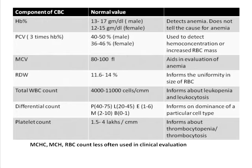Red cell distribution width is not often reported by many laboratories but adds value because it gives you information about whether the sizes of the red cells are uniform. If they are of grossly varying sizes — as seen in anisocytosis, iron deficiency anemia, and many other disorders — this red cell distribution width will be higher than normal. It is a good tool to predict the changes you would expect in a peripheral smear.